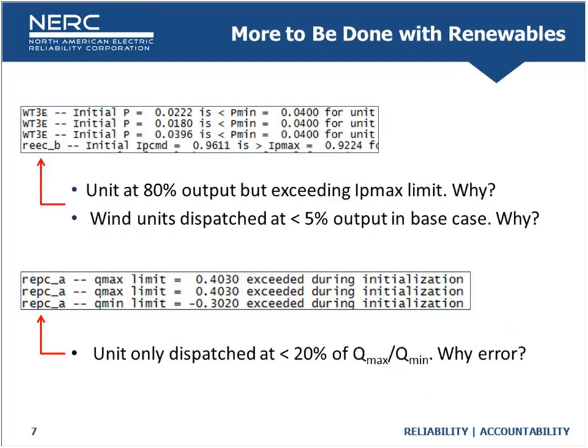Linking that to dynamics: if you pick up a base case off the shelf and initialize it, you can get a whole bunch of errors. For example, units operating at 80% of active power output yet exceeding their maximum real current command, or wind dispatched in the case at less than 5% — which raises questions about why you'd pick up a case at such a strange operating point.